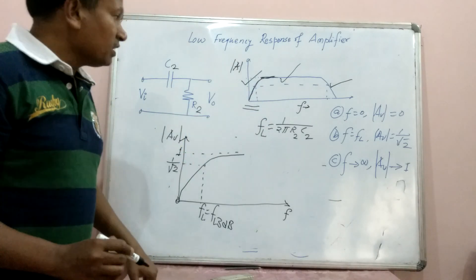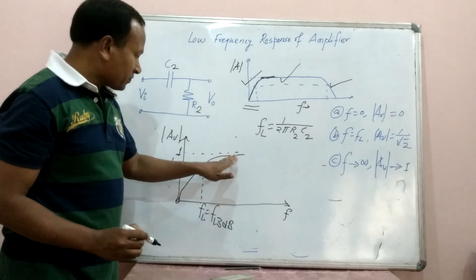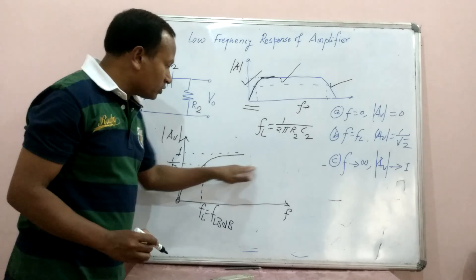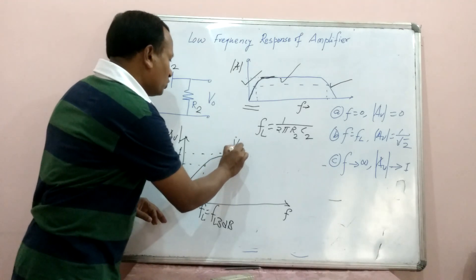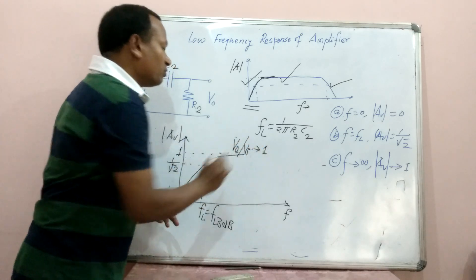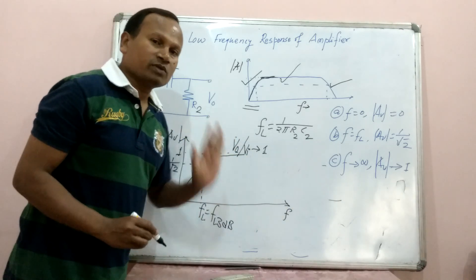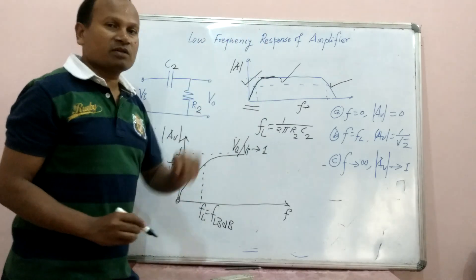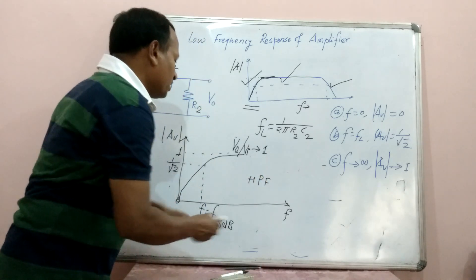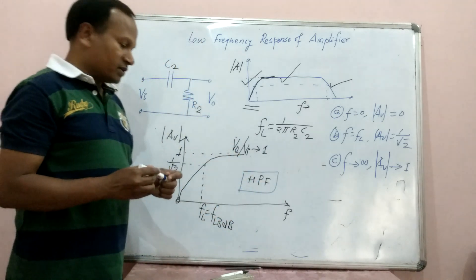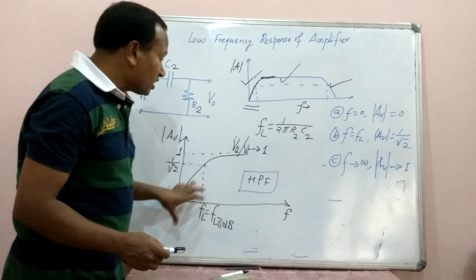One more observation: when we move towards lower frequency, the gain is reducing. When we move towards higher frequency, the gain becomes unity — meaning VO divided by VI equals 1, so the input signal is passed to the output completely. Therefore, the low frequency response of an amplifier behaves like the response of a high-pass filter, because this circuit passes higher frequency signals while low frequency signals are attenuated.